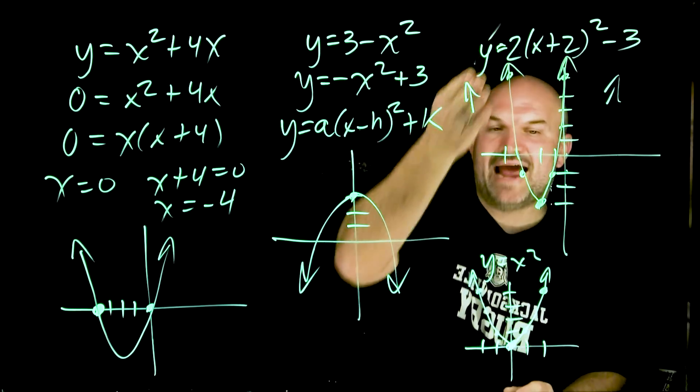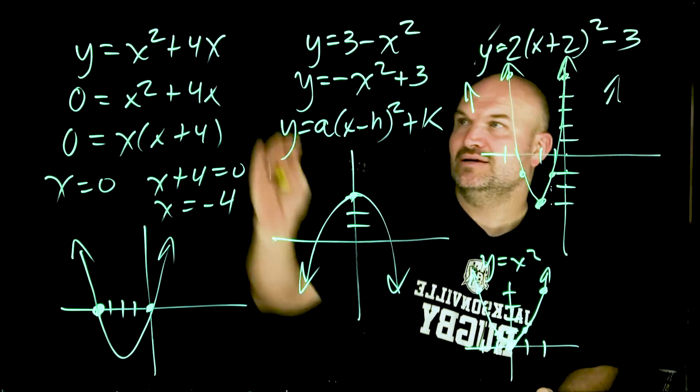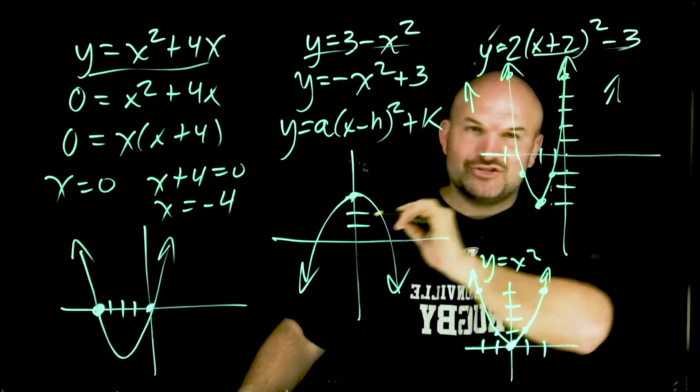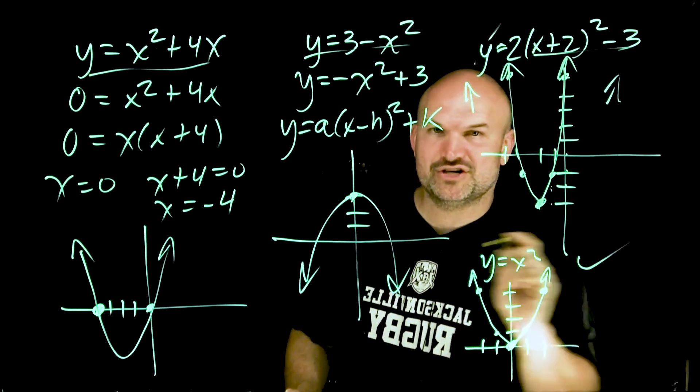And if we had like 1 half, then you'd go over 1, up 1 half, right? Because 1 times 1 half is going to be 1 half. So ladies and gentlemen, these three quadratics happen all the time. Students forget them. I don't want that to happen to you. I hope this video was helpful. Cheers.